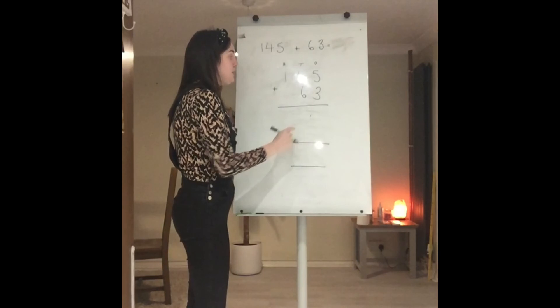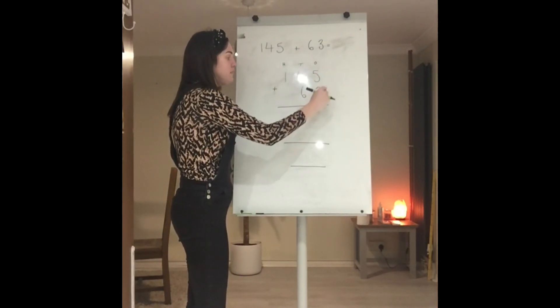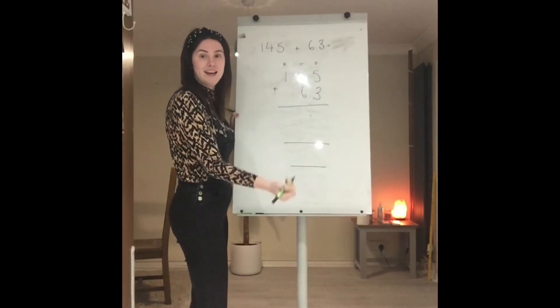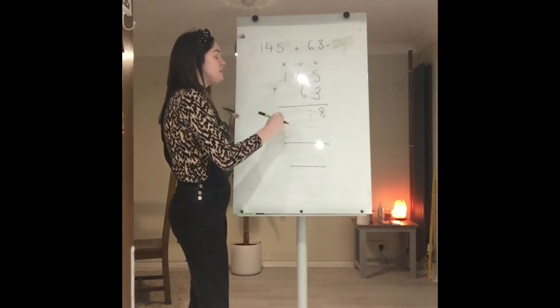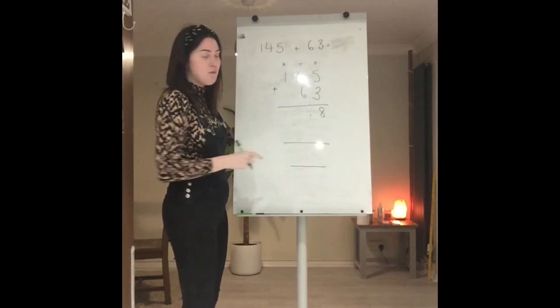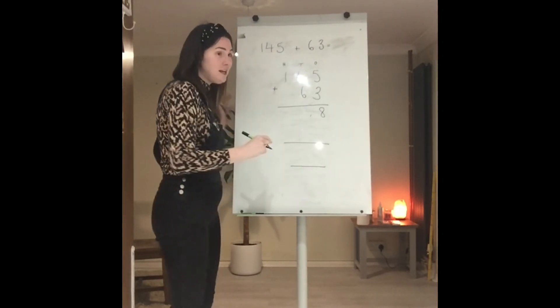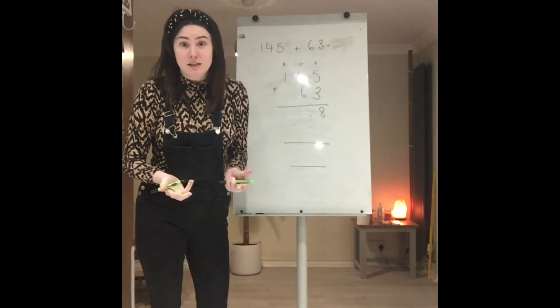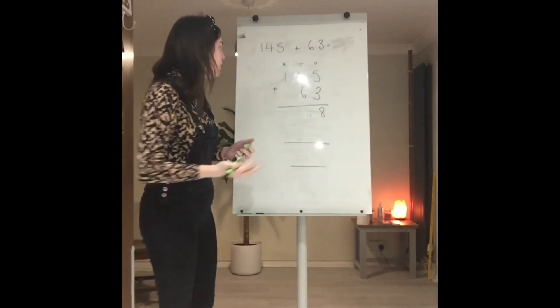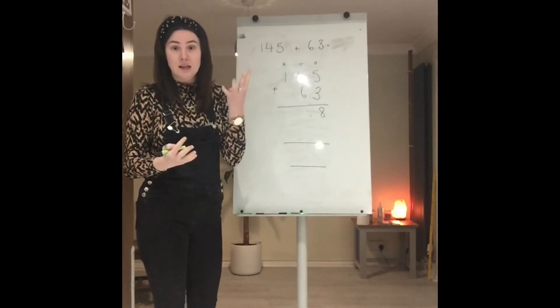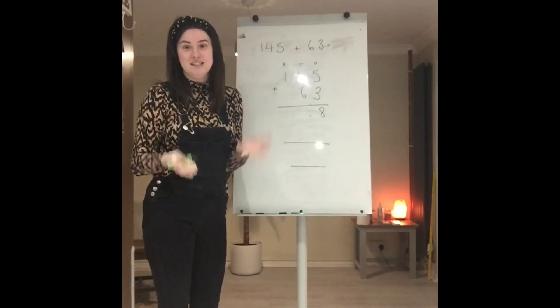The first thing we need to do is 5 plus 3, which we know is 8. Our next thing we need to do is work on our tens column and we have 40 plus 60. You can do this by counting tens, you can do this by counting your fingers, whatever works best for you. But I know that 40 and 60 is 100.